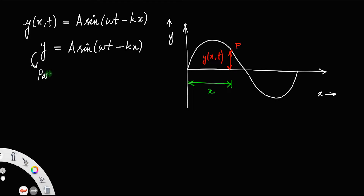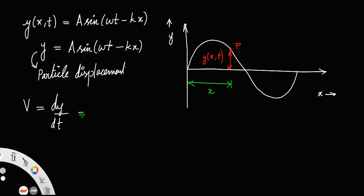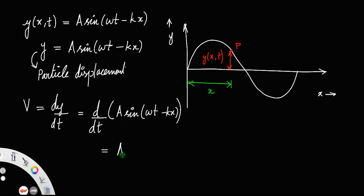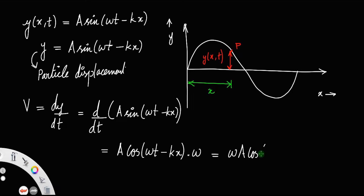This is called particle displacement. Now, in order to find the particle velocity v, we must find the derivative of y with respect to time, that is dy/dt, which equals d/dt of a sin(ωt − kx). Taking a outside, the derivative of sin is cos, giving cos(ωt − kx), and the derivative of ωt is ω. This equals ω·a·cos(ωt − kx).